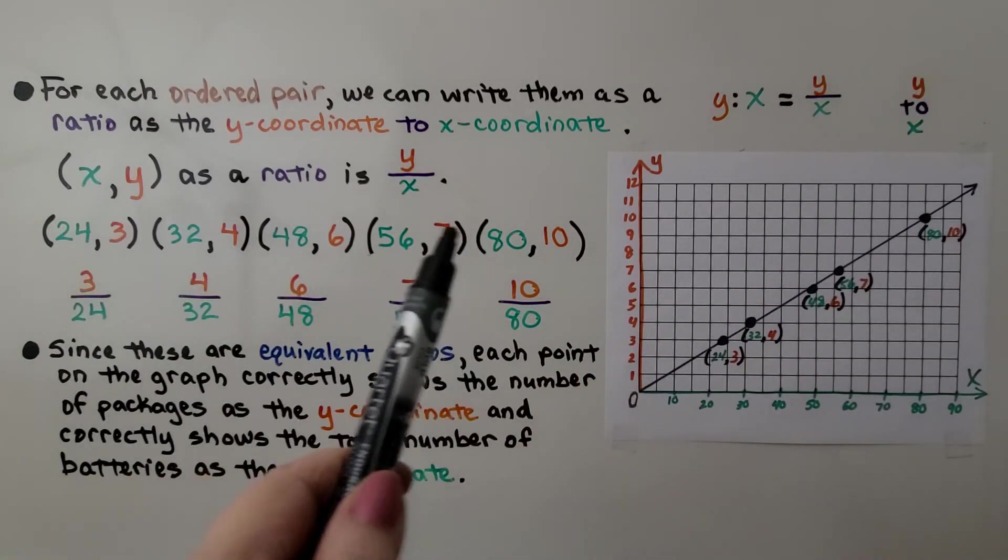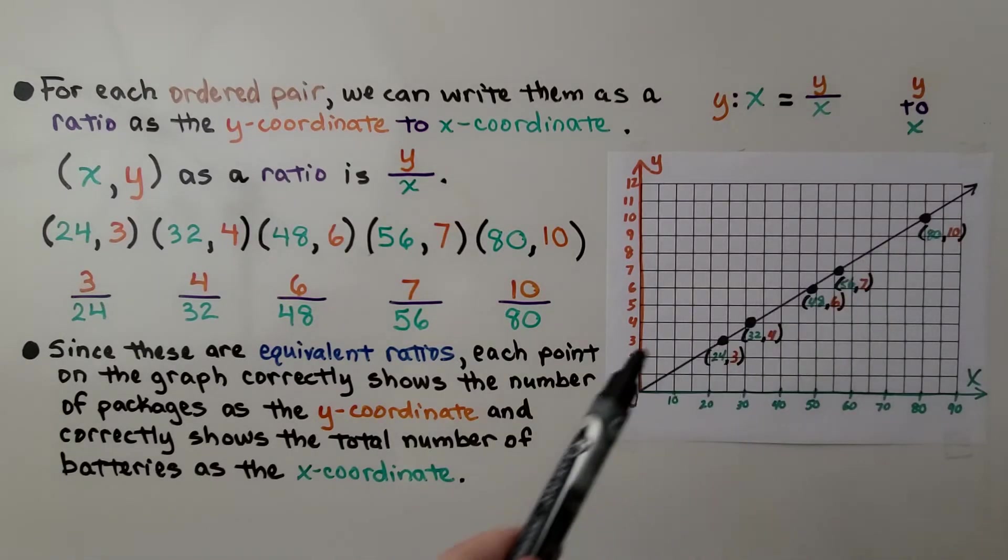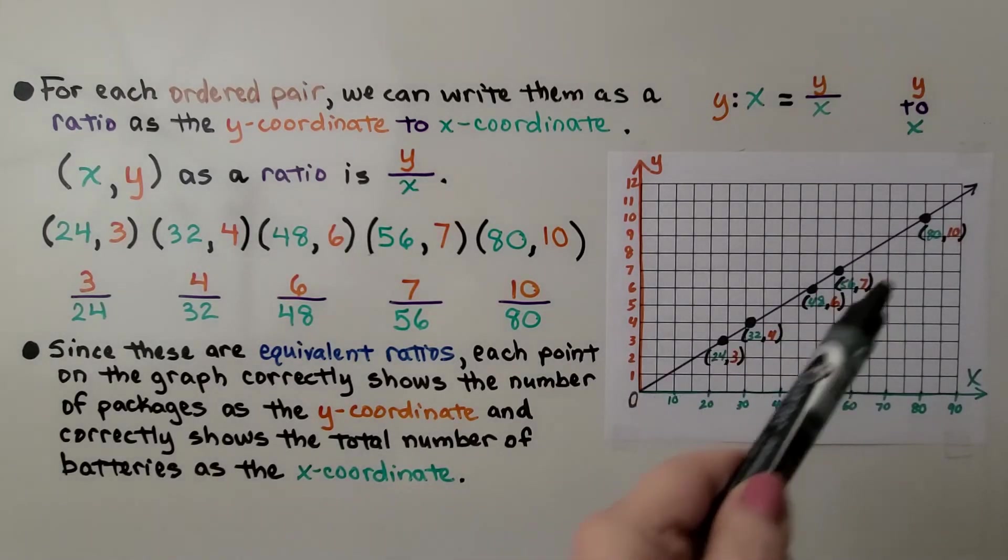We have our ordered pairs, and we switch them around and put them like they were in the table. And we have a nice straight line going from the origin through all the points.